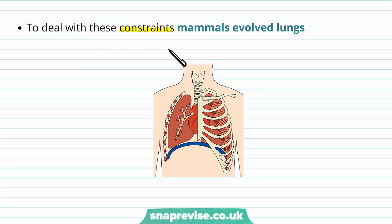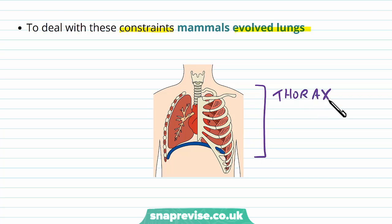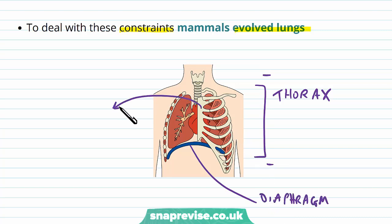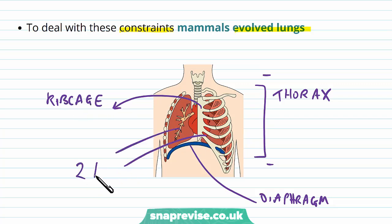Because of all these processes, the amount of oxygen consumed and CO2 produced is quite high, so we need a gas exchange system like our lungs. To deal with these demands, we've evolved the lungs, which are found in the chest in the general area defined as the thorax, going from the neck to the abdomen. The lungs are encased in a protective rib cage, with the diaphragm underneath, and we have two lungs — one for each side of the body.